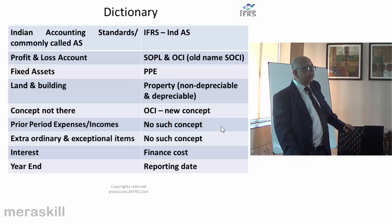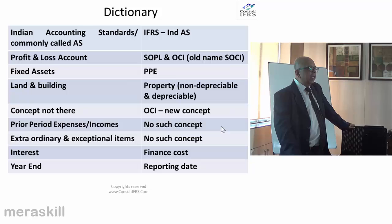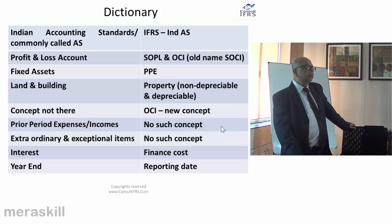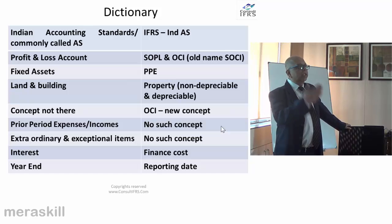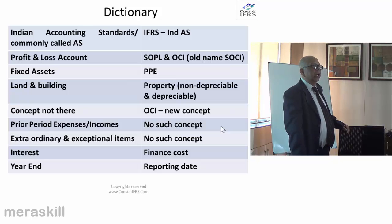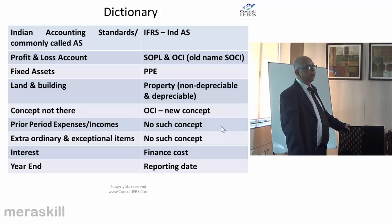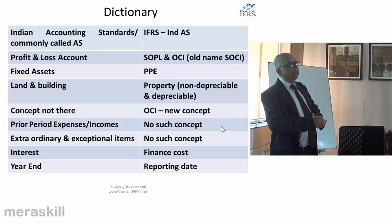Tangible is actually a fine word — it is the word used in Schedule 3. Then why call it PPE? One reason is that investment property needs to be shown separately, so the tangible asset word had to give way. But the beginning reason was: what about inventory? Inventory is also a tangible asset.